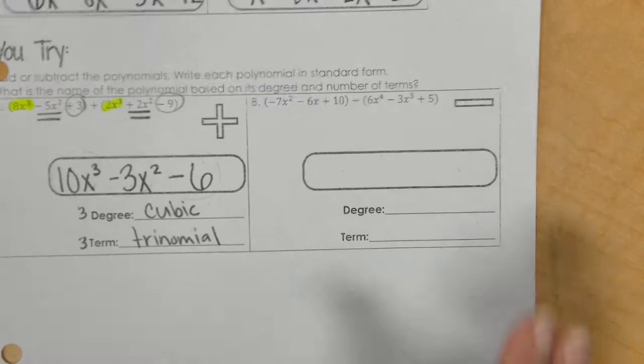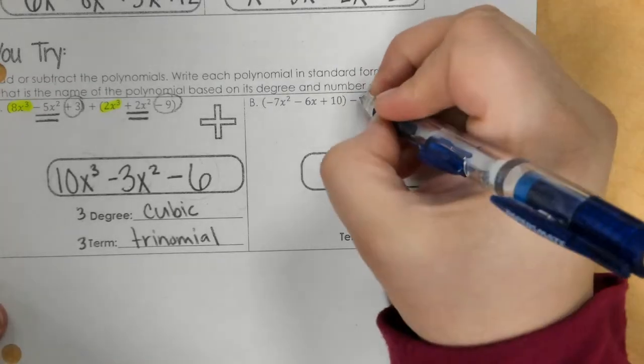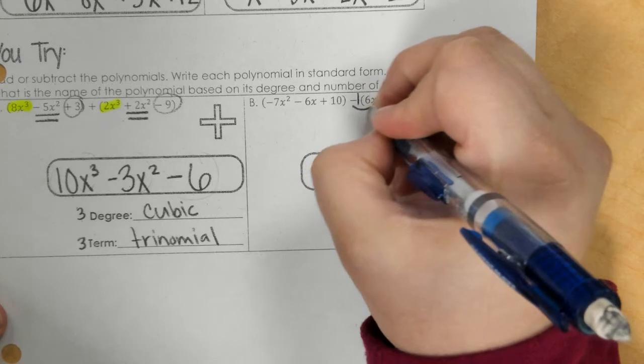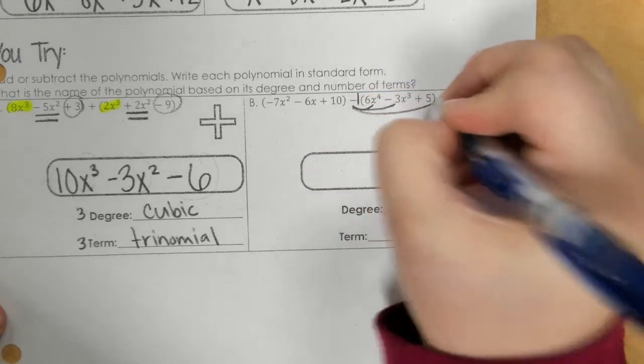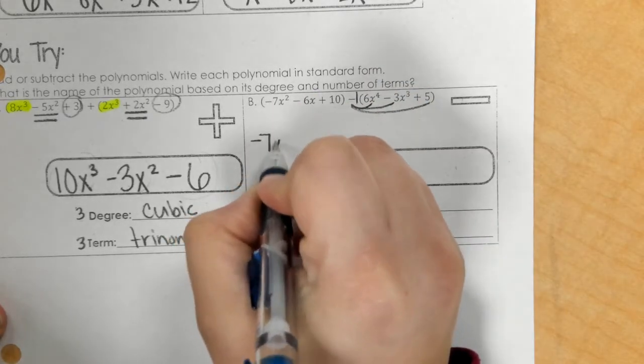In part B, this is a subtraction problem. So remember, there's like that negative 1. And we have to distribute to everything. So the top stays the same.